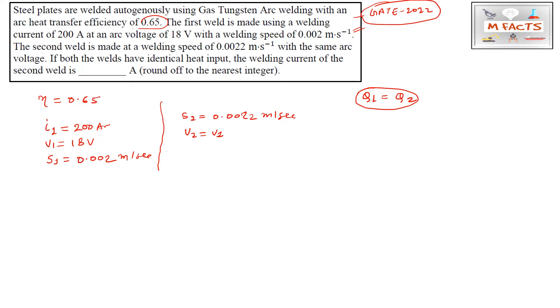I've already explained the concept behind this formula. For arc welding, the heat input is given by: Heat input = η × V × I / S, where V is voltage, I is current, S is speed, and η is heat transfer efficiency. In this case, they're asking for Q₁ = Q₂ and V₂ = V₁.